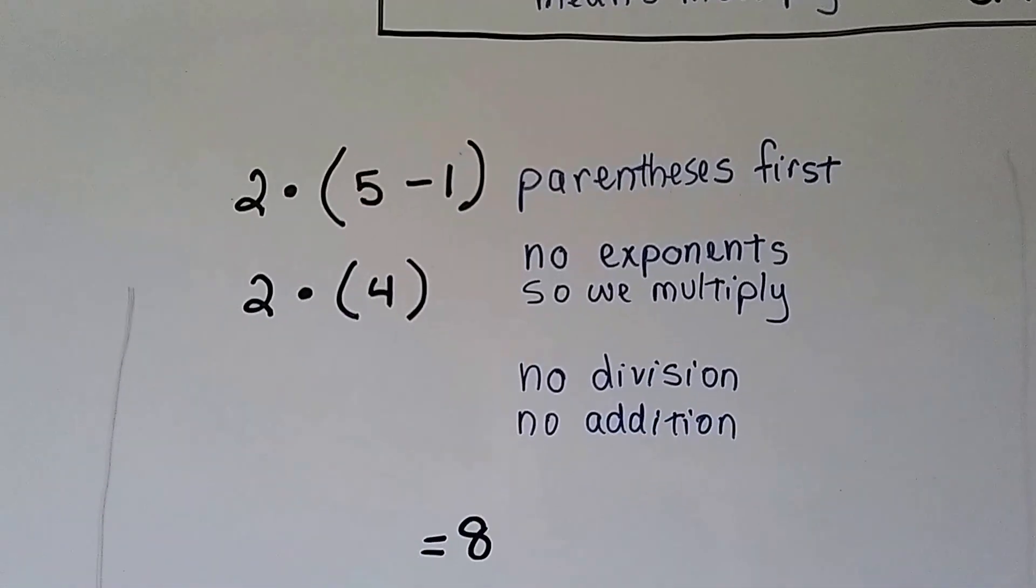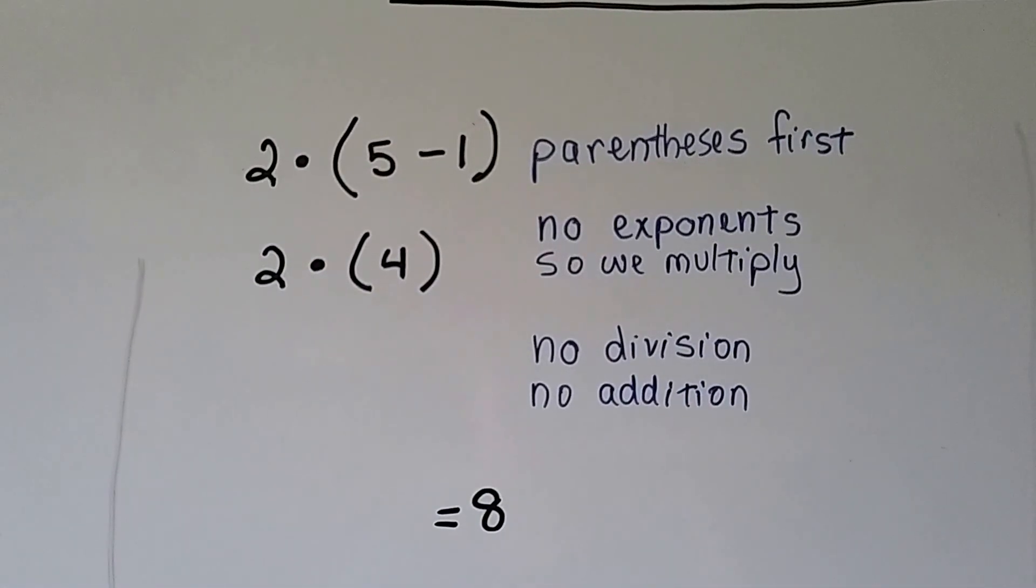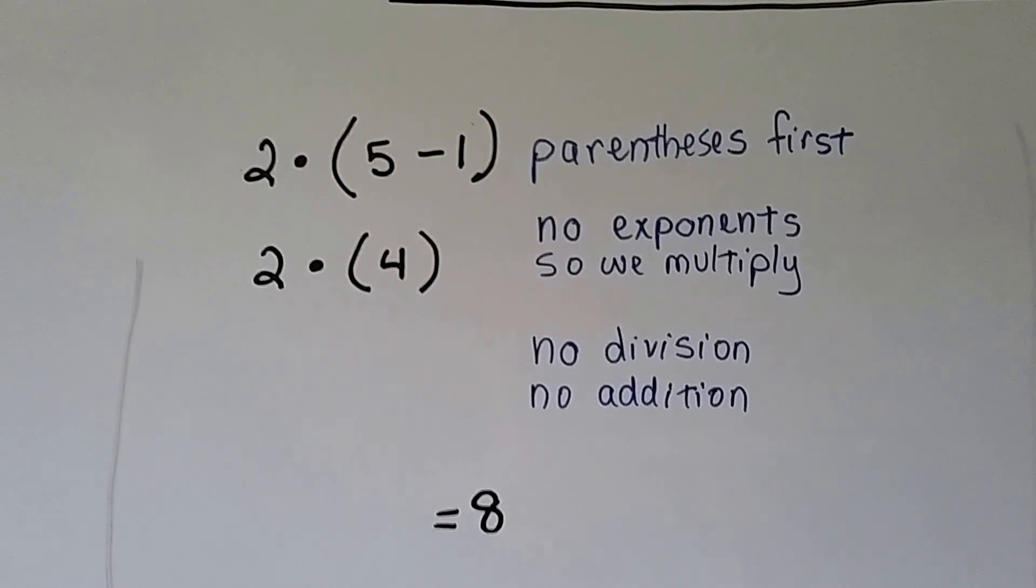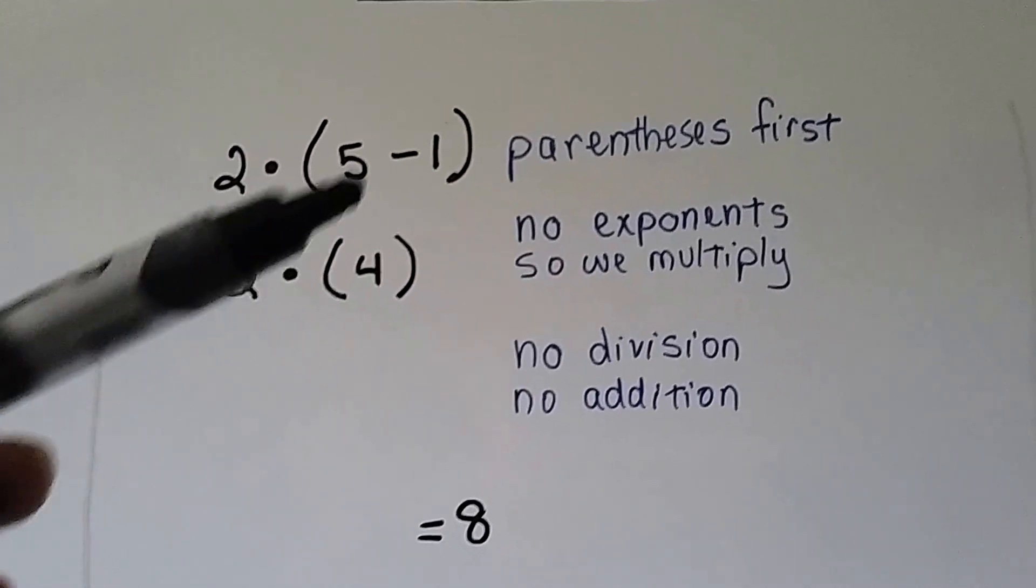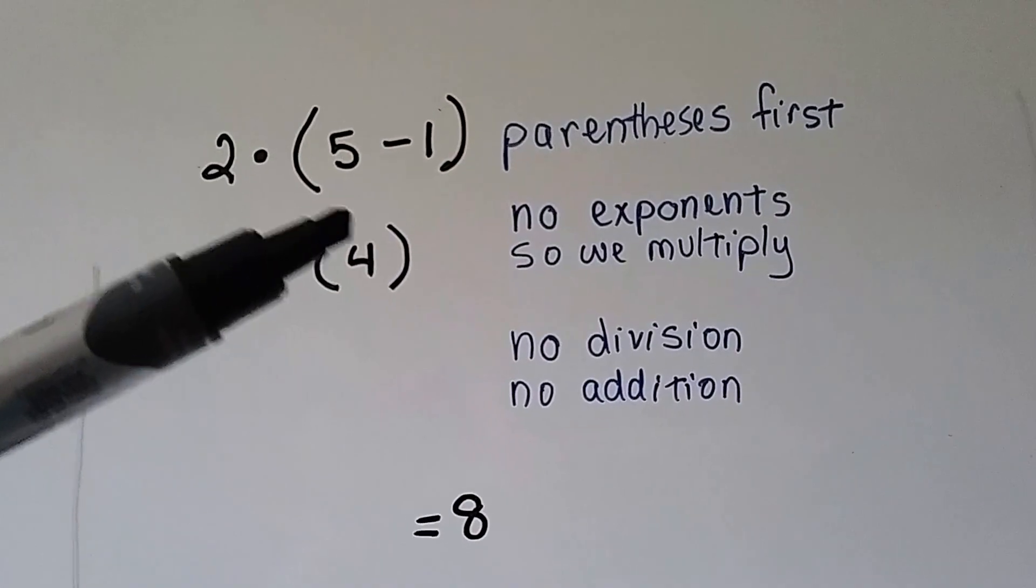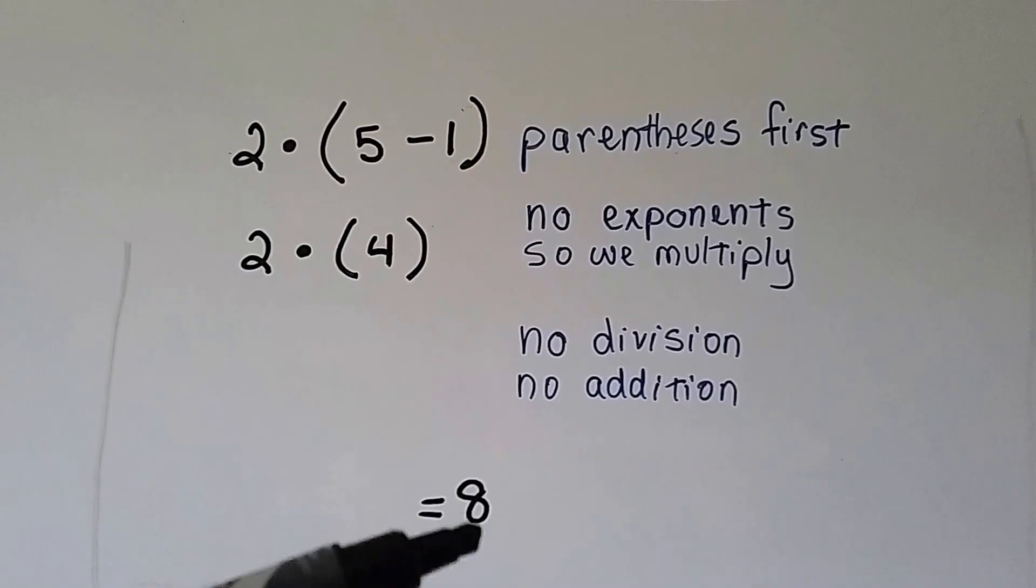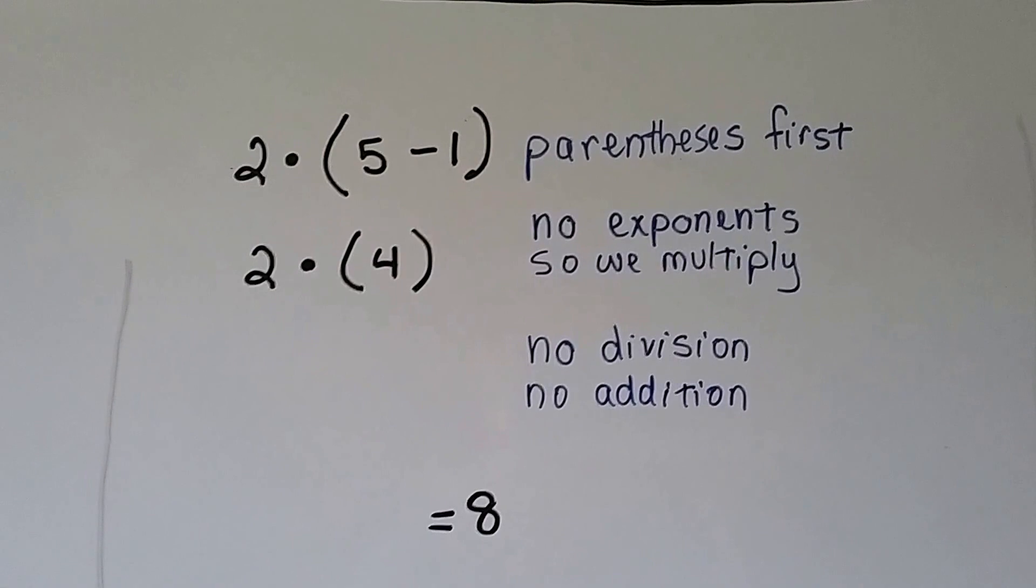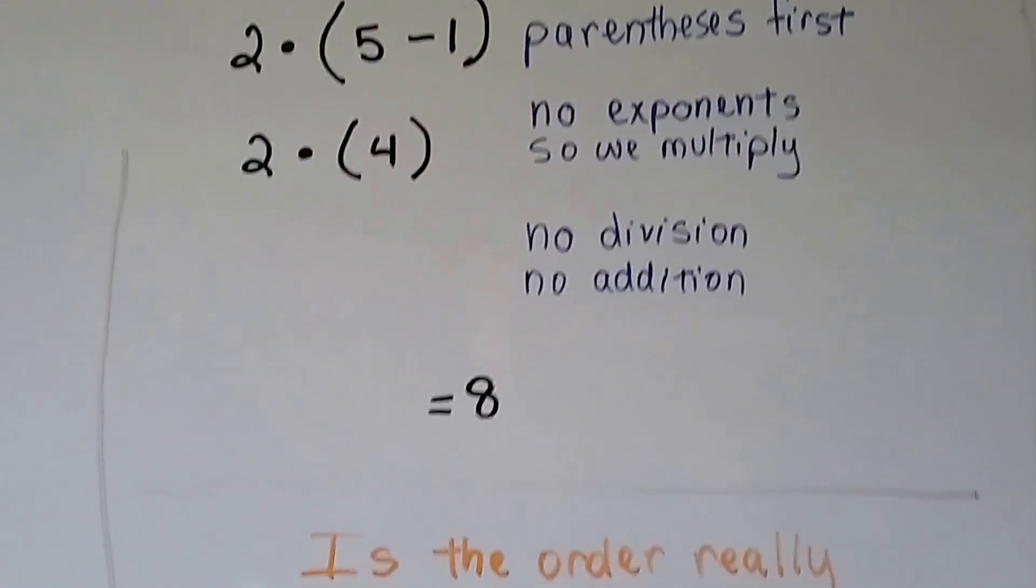So in this one, we have 2 times 5 minus 1. We do the parentheses first. And there's no exponents, so we're going to do a 4. And then we're going to go straight to multiplication. We have 8. There's no division. There's no addition. So we skip those steps.